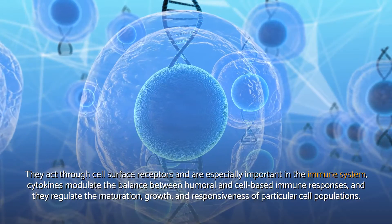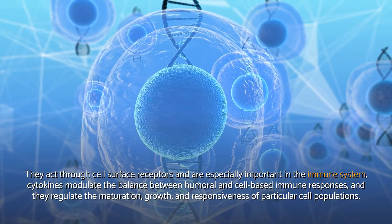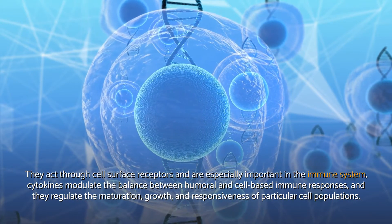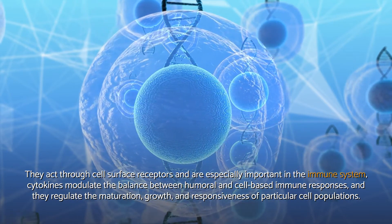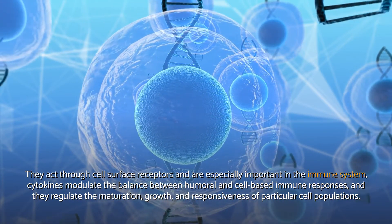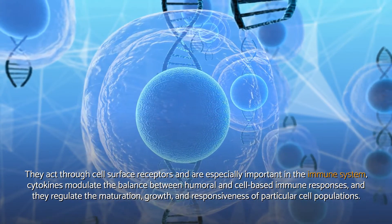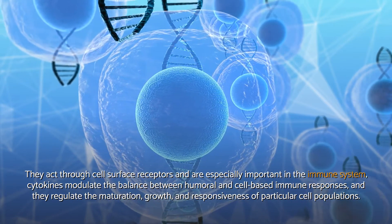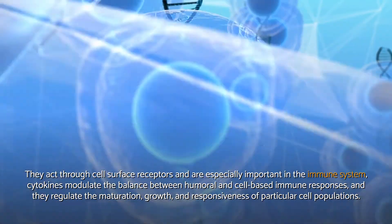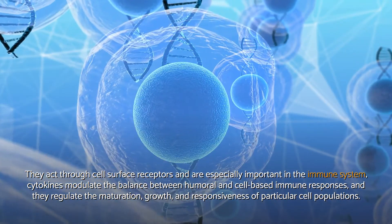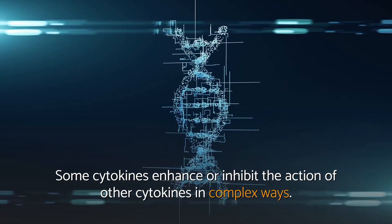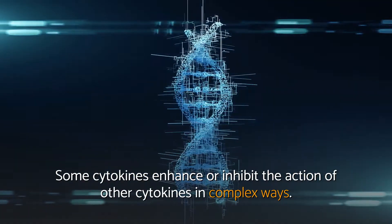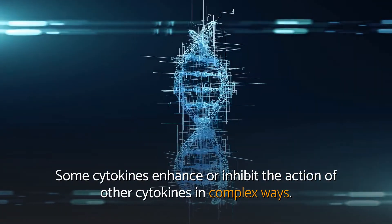They act through cell surface receptors and are especially important in the immune system. Cytokines modulate the balance between humoral and cell-based immune responses, and they regulate the maturation, growth, and responsiveness of particular cell populations. Some cytokines enhance or inhibit the action of other cytokines in complex ways.